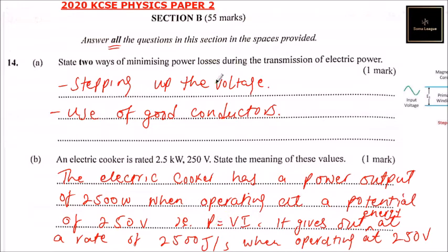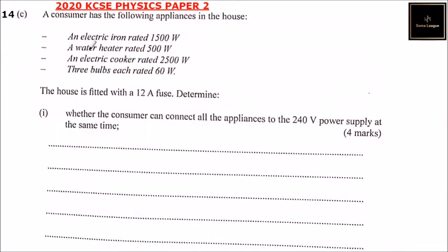Let's go to part c of question 14. A consumer has the following appliances in the house: an electric iron rated 1500 watts, a water heater rated 500 watts, an electric cooker rated 2500 watts, and three bulbs each rated 60 watts. The house is fitted with a 12 ampere fuse. Determine whether the consumer can connect all devices to the 240 volt supply at the same time.